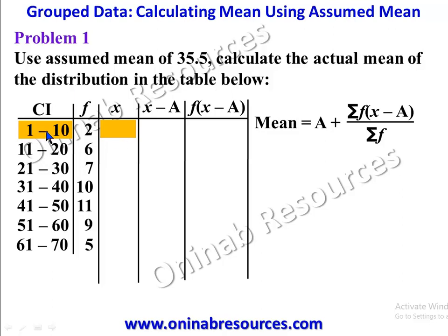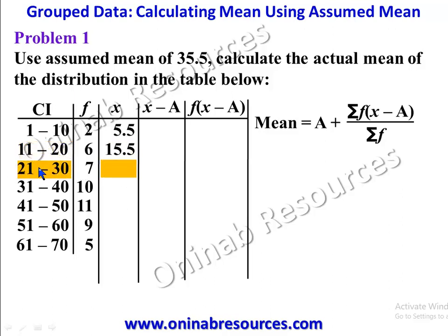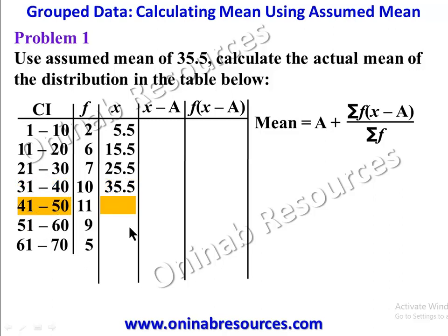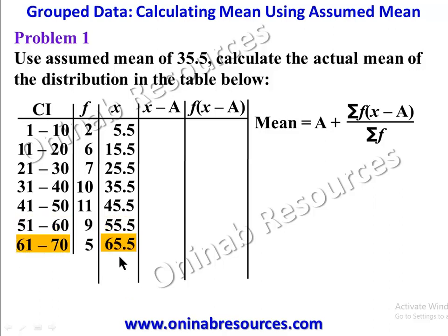Calculating the midpoints: 1 plus 10 divided by 2 gives 5.5; 11 plus 20 divided by 2 gives 15.5; 21 plus 30 divided by 2 gives 25.5; 31 plus 40 divided by 2 gives 35.5; 41 plus 50 divided by 2 gives 45.5; 51 plus 60 divided by 2 gives 55.5; and 61 plus 70 divided by 2 gives 65.5.